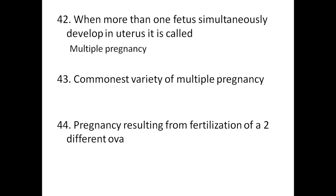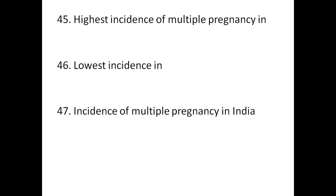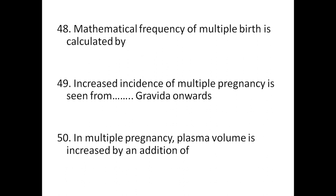The drug for long-term management of hydatidiform mole is methotrexate. When more than one fetus simultaneously develops in the uterus, it is called multiple pregnancy. The commonest variety is twin pregnancy. Pregnancy resulting from fertilization of two different ova is known as dizygotic twins. The highest incidence of multiple pregnancies is in Nigeria; the lowest is in Eastern countries. The incidence in India is 1 in 18. Mathematical frequency of multiple births is calculated by Hellin's rule. Increased incidence of multiple pregnancies is seen from the fifth gravida onwards. In multiple pregnancy, the plasma volume increases by an additional 500 ml.